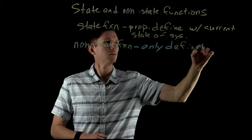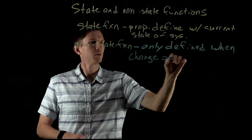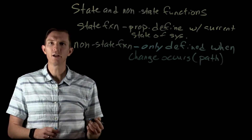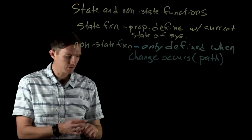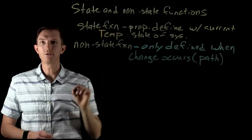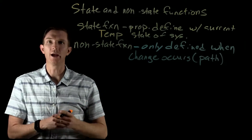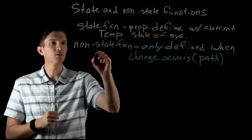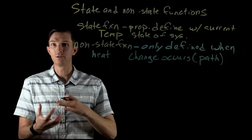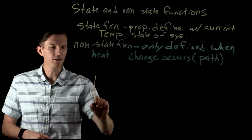A non-state function is only defined when a change occurs — it has to go along some path or change. As an example of a state function, temperature is something we can define simply by looking at a substance. A non-state function, on the other hand, would be heat — what happens to a substance as it changes temperature.